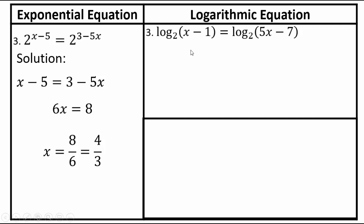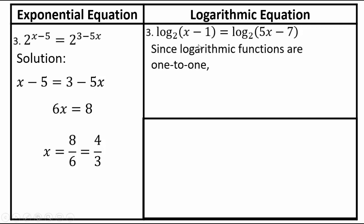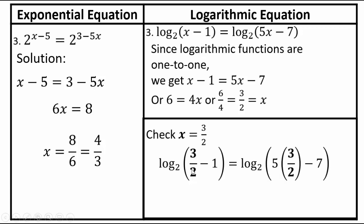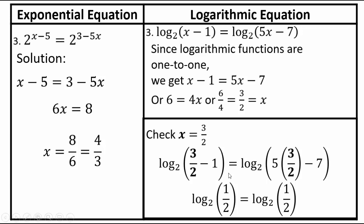For the logarithmic equation with log base 2 on both sides: since the log base 2 function is one-to-one, we have x minus 1 equals 5x minus 7, giving 4x equals 6, so x equals 3/2. This is the exact solution. To check, substitute x equals 3/2: log base 2 of (3/2 minus 1) equals log base 2 of (5 times 3/2 minus 7), which gives log base 2 of 1/2 equals log base 2 of 1/2. It checks out.